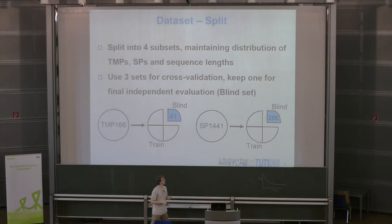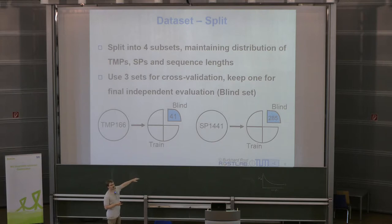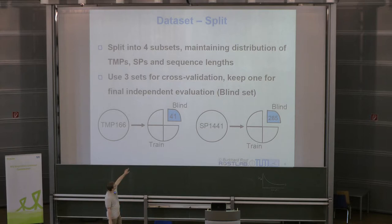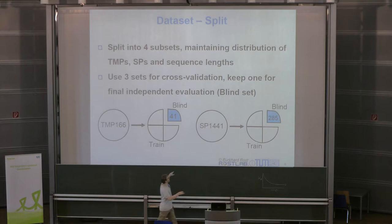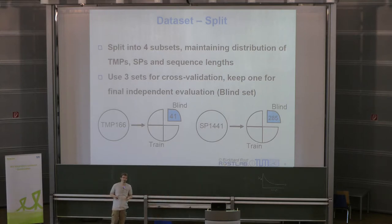In response to a question: the 75/25% split combined both the transmembrane proteins (TMP) and SignalP (SP) data into one dataset. I combined them into one dataset of positive and negative samples for transmembrane versus non-transmembrane proteins rather than training two separate methods.